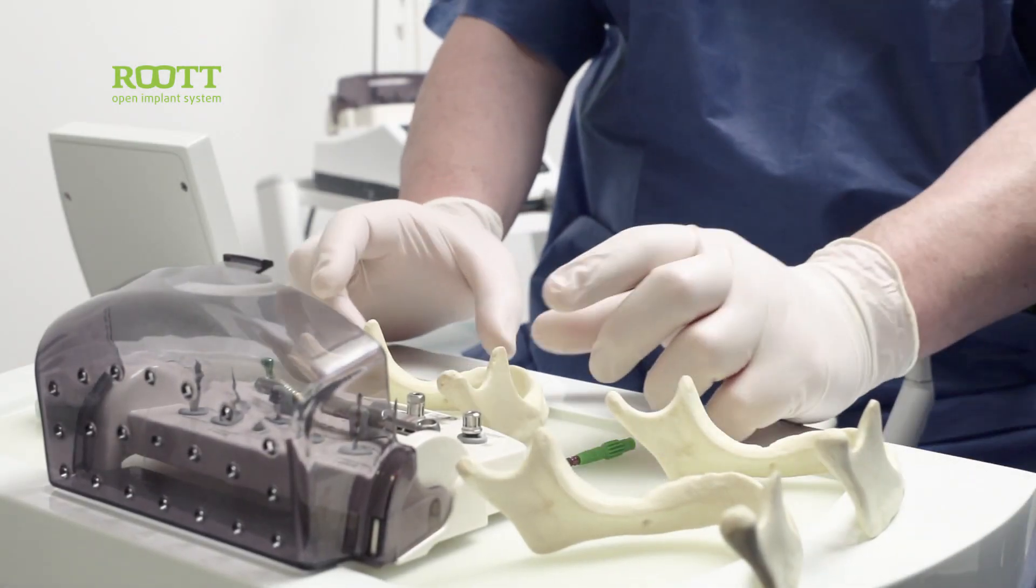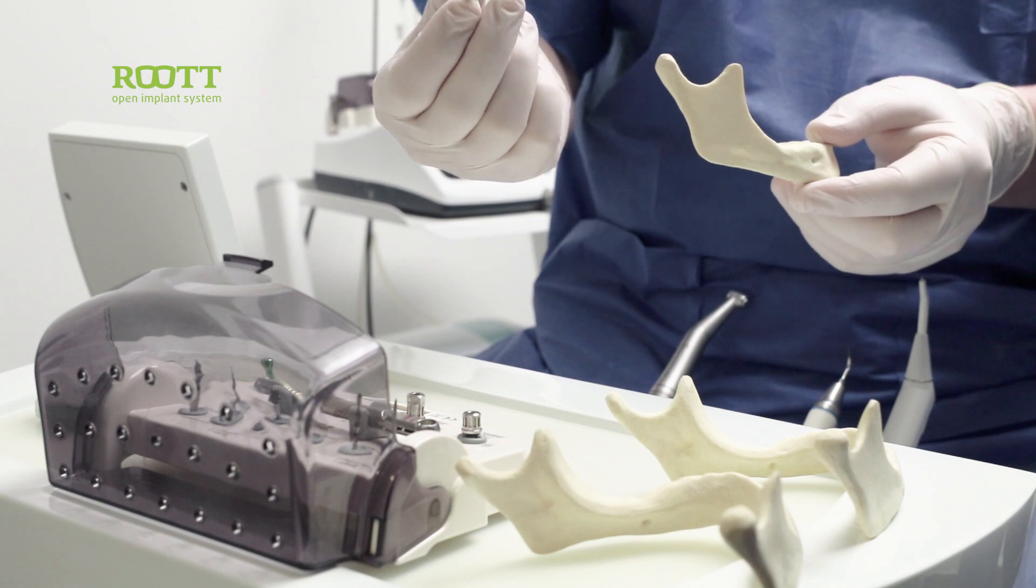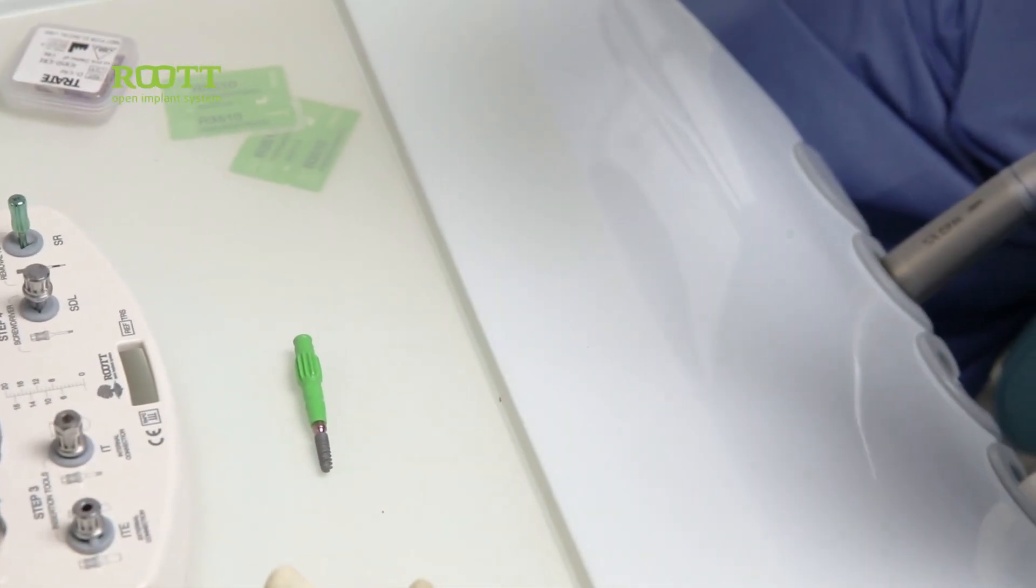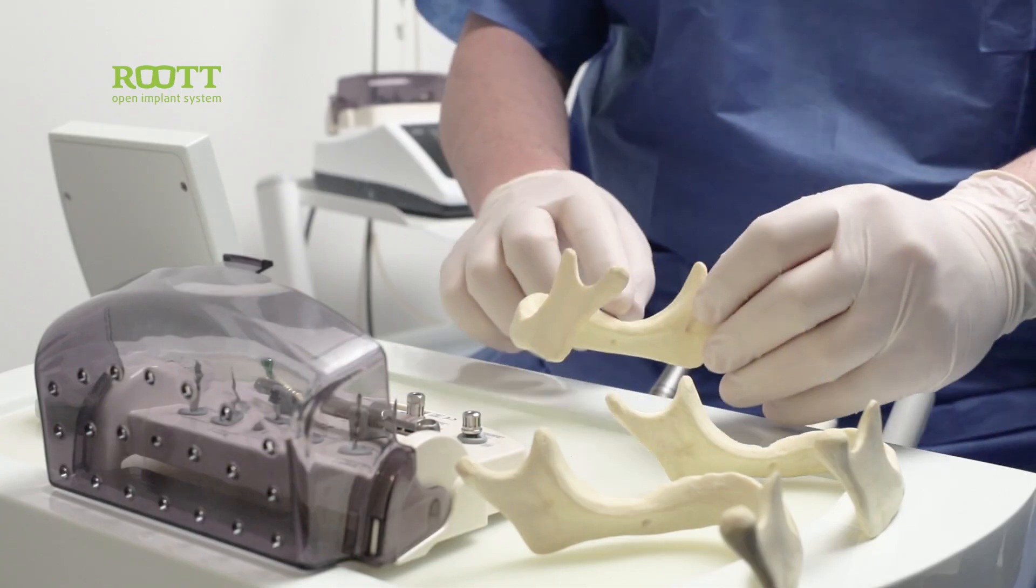This is a demonstration for root form implant placement. We are going to place on our demo an implant 12mm 3.8. The implant will be placed in here, in this position, in position of 46.